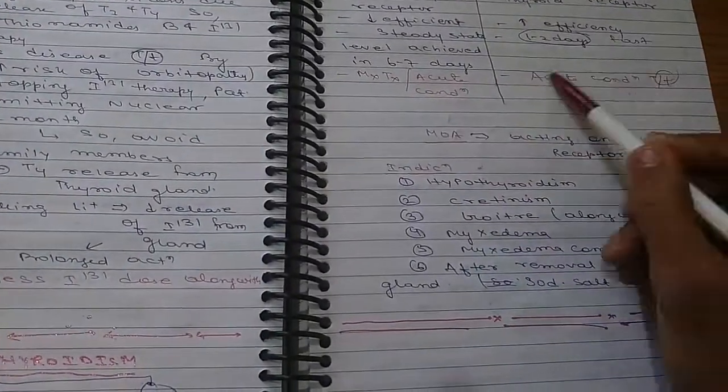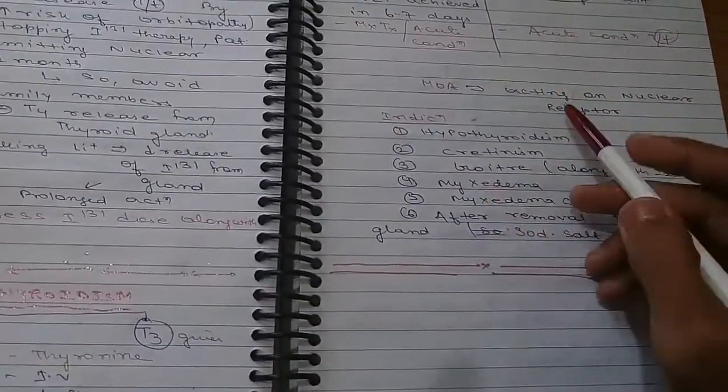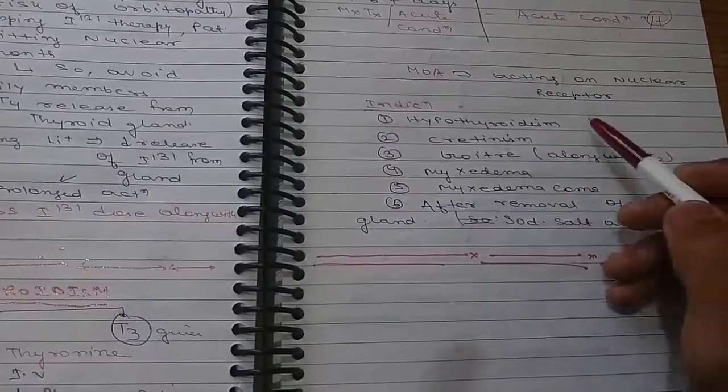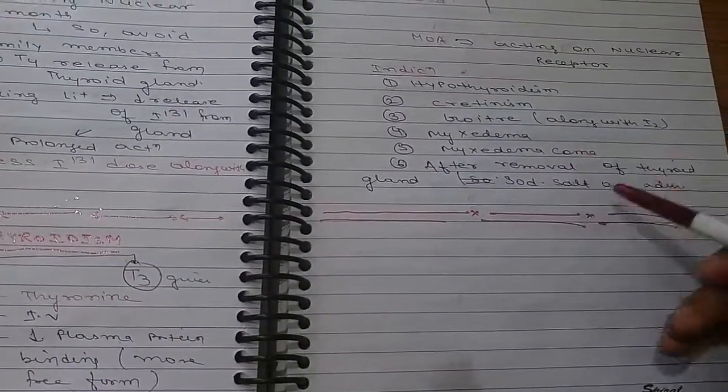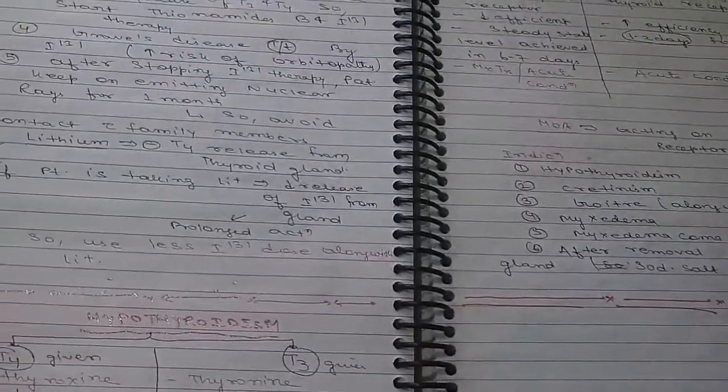So levothyroxine is used for maintenance treatment, liothyronine is used for acute condition. Mechanism of action: it is acting on nuclear receptors. Indications: hypothyroidism, cretinism, myxedema, myxedema coma. So this is all about thyroid disorder. Thank you.